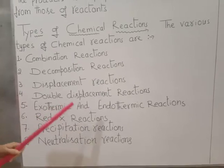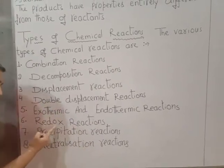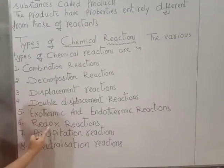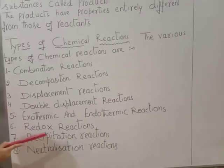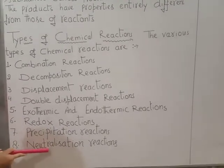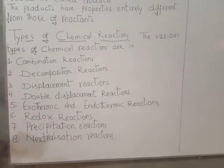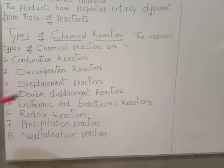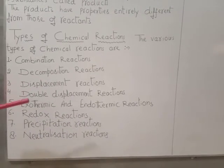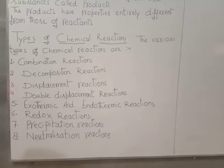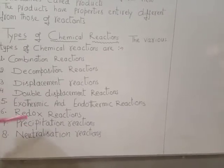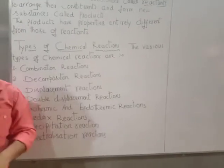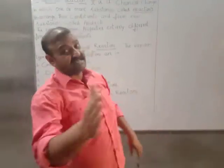Continuing the list — number six, redox reactions, which are very important and will also appear in Class 11; number seven, precipitation reactions; and number eight, neutralization reactions. So students, these are the eight various types of chemical reactions we will study in this chapter.